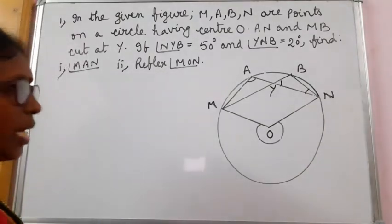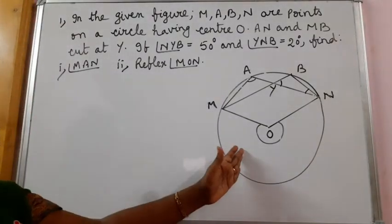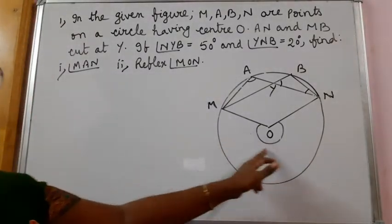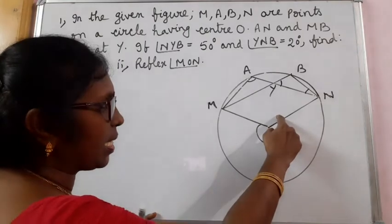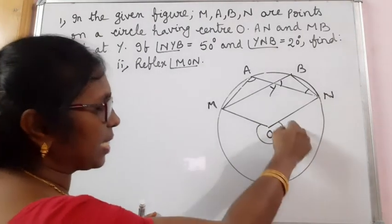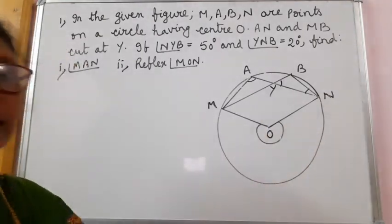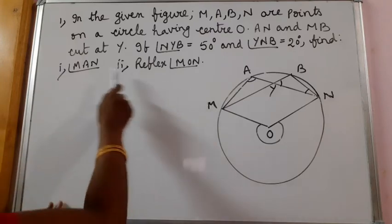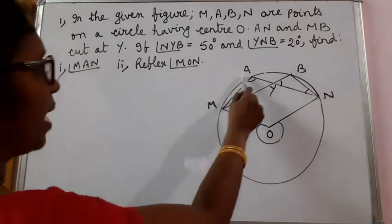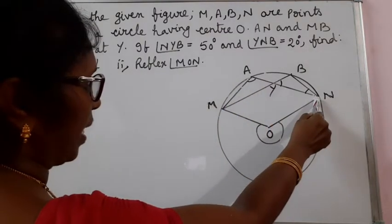You know what a reflex angle is? Reflex angle MON is this — the larger angle, while angle MON is the smaller one. Okay? Let us work out to get this. First, angle MAN we have to find.